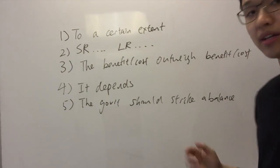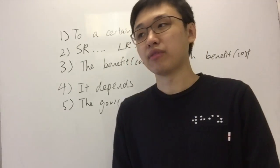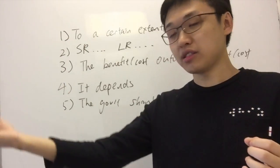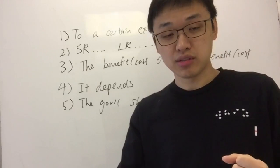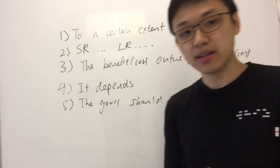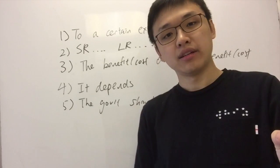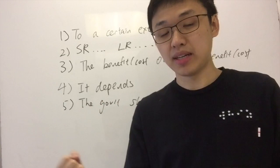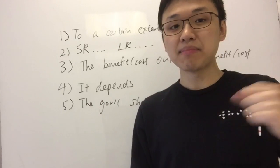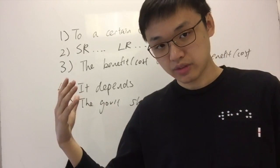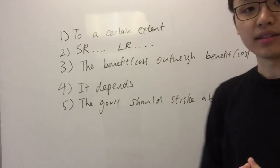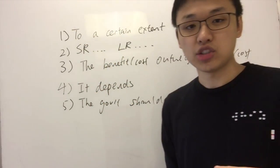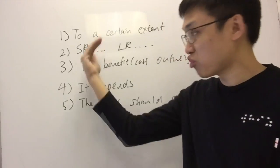The last method is 'the government should strike a balance.' The idea here is that, for example, if you impose indirect tax, that can lead to unemployment, but on the other hand there is less smoking, so there is an improvement in the health of society. You can say: 'The government should strike a balance between protecting jobs and reducing smoking in society.' If the indirect tax is too heavy, the cost of unemployment can outweigh the benefit from less smoking. It's important to minimize unemployment while reducing smoking as much as possible. You can use all of these methods together, but you should read your article and see which ones really work for you.